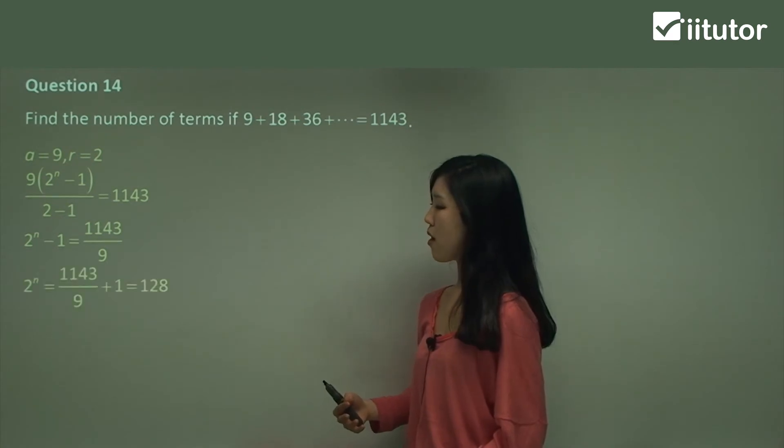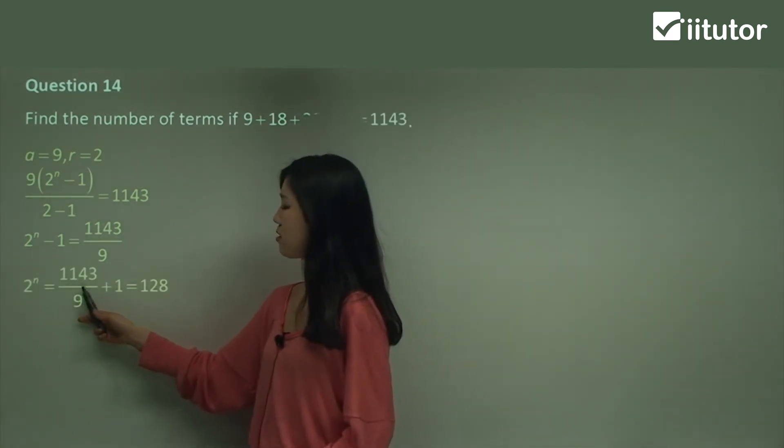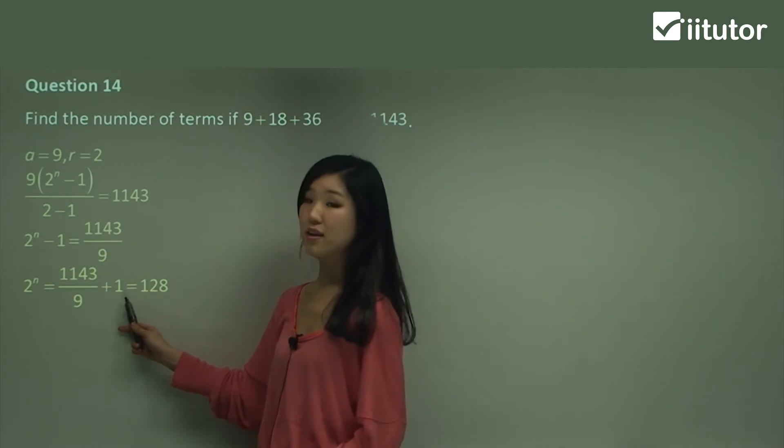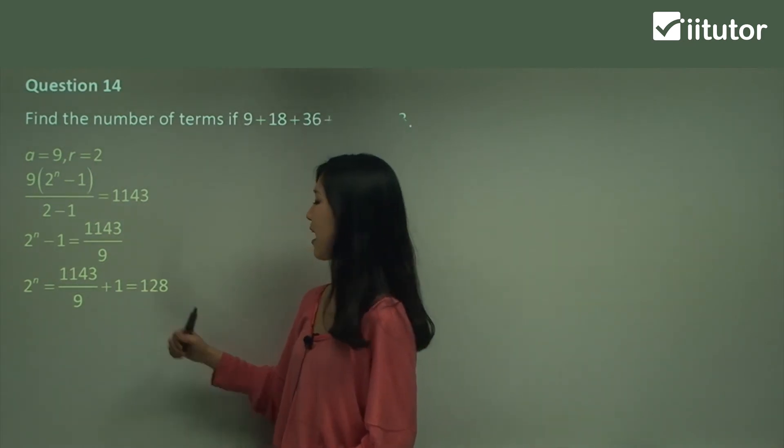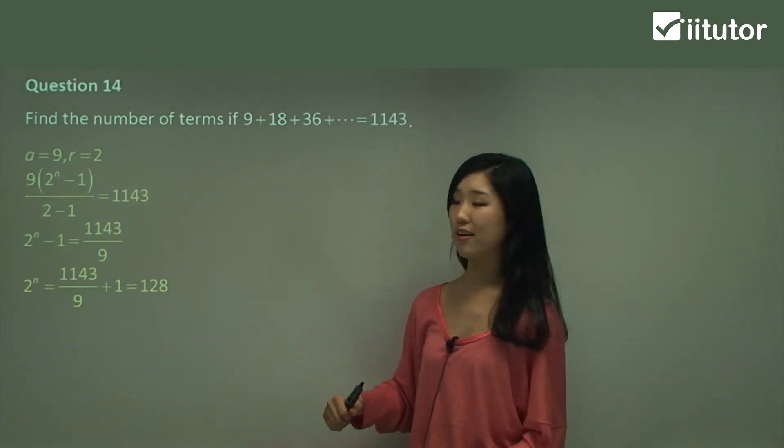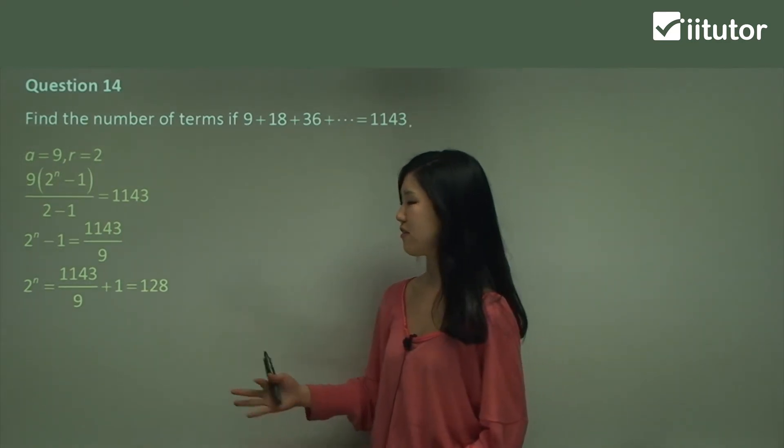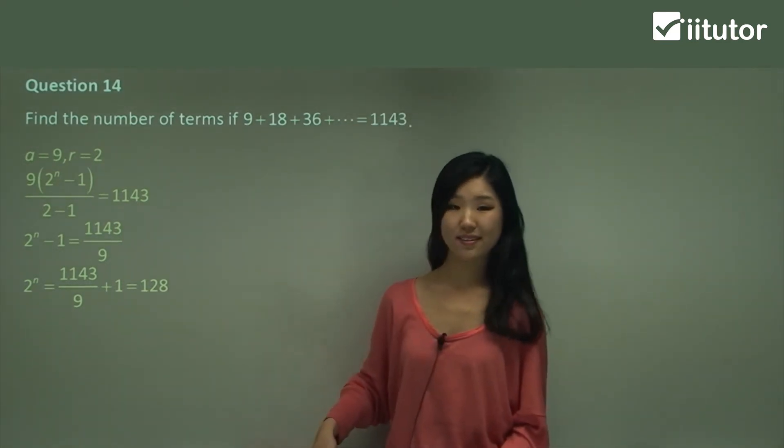And then now just move 1 over to the other side. So we have 1143 over 9 plus 1. Simplify that guys. You should get 128. Just simplify it. Use your calculator if you need to. It should be 128.